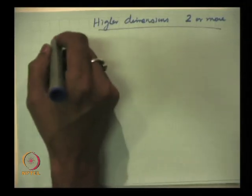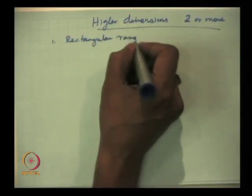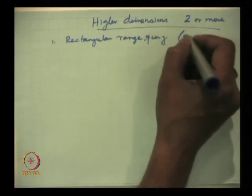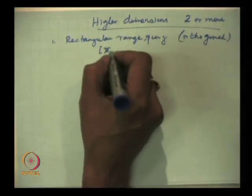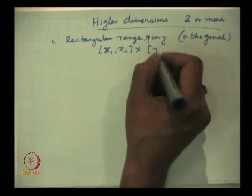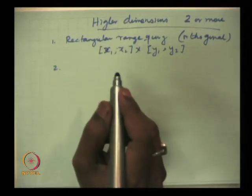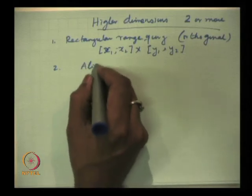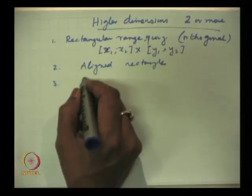In higher dimensions, ranges can be of many kinds. One is the orthogonal rectangular range query — basically Cartesian product of one-dimensional intervals. But ranges need not be orthogonal — they may be aligned at any angle. Other natural queries include circular range queries: given a ball of radius r centered at some point c, what are the points inside the ball?